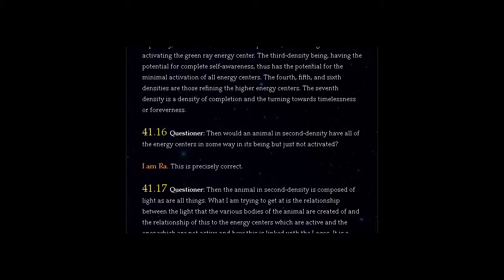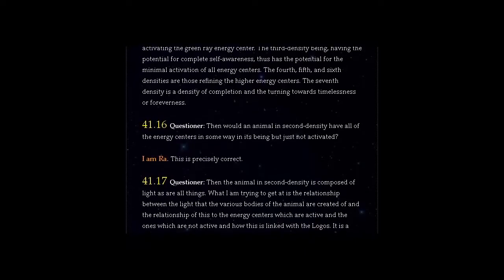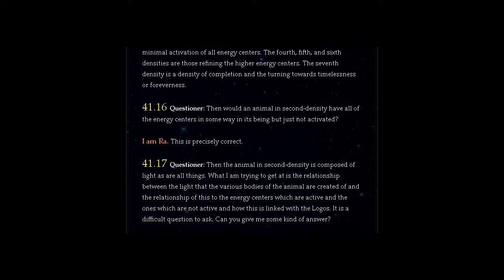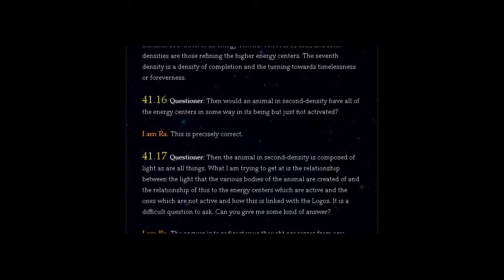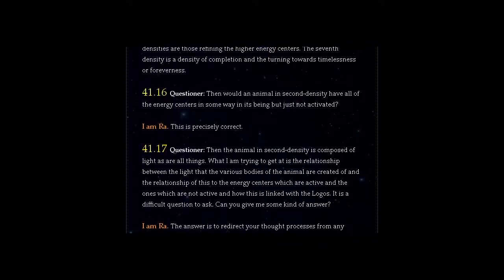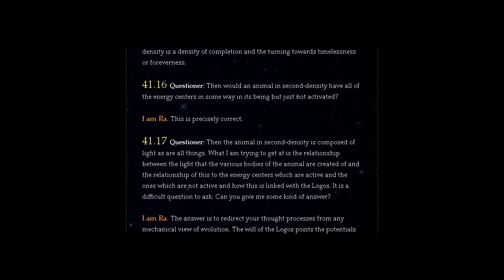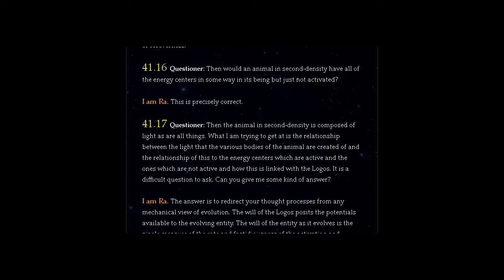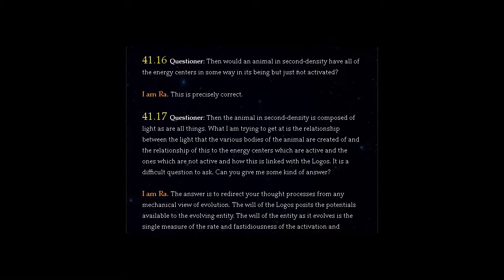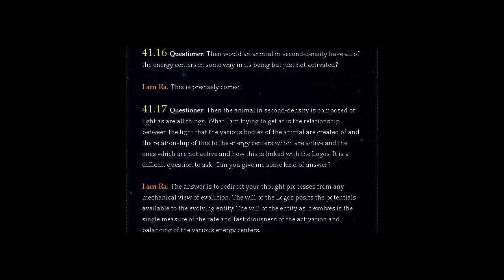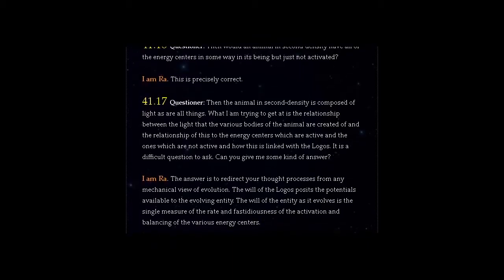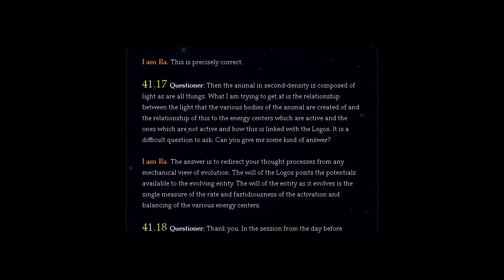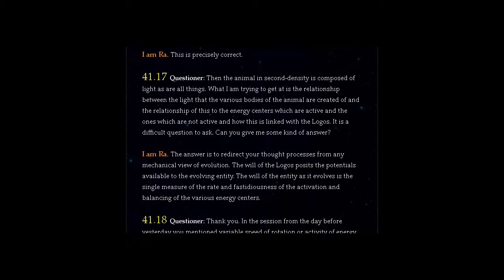Question 41.17: The animal in second density is composed of light as are all things. What I am trying to get at is the relationship between the light that the various bodies of the animal are created of, and the relationship of this to the energy centers which are active and the ones which are not active, and how this is linked with the logos. Can you give me some kind of answer? Answer, I am Ra. The answer is to redirect your thought processes from any mechanical view of evolution. The will of the logos posits the potentials available to the evolving entity. The will of the entity as it evolves is the single measure of the rate and fastidiousness of the activation and balancing of the various energy centers.